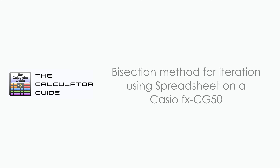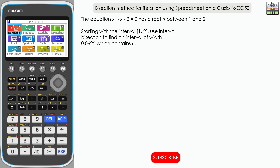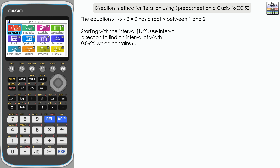Hello and welcome to the Calculator Guide video on the bisection method for iteration using spreadsheet on a Casio FX CG50. We're going to be using spreadsheet in this video. You can also use any calculator that has the spreadsheet facility, including a Casio FX 991 EX — slightly different location for the features but it operates in a very similar way.